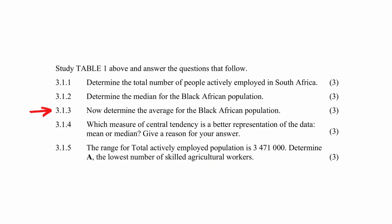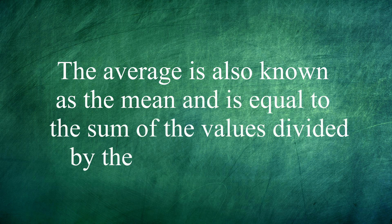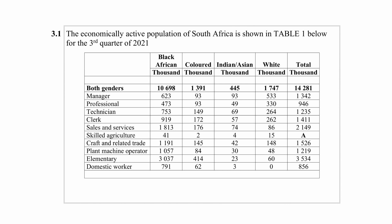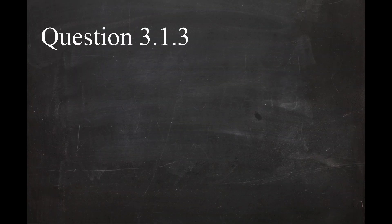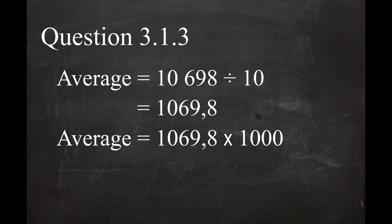In question 3.1.3 you have to determine the average of the Black African population. The average is also known as the mean and is equal to the sum of the values divided by the number of values. The sum of the Black African population is given as 10,698 in the table. So the average equals 10,698 divided by 10, which gives you an average of 1,069.8. Multiplying this value by 1,000 gives you a value of 1,069,800.